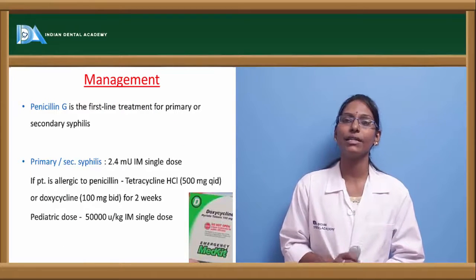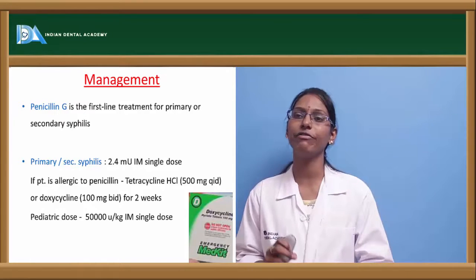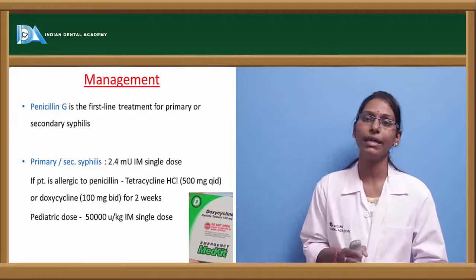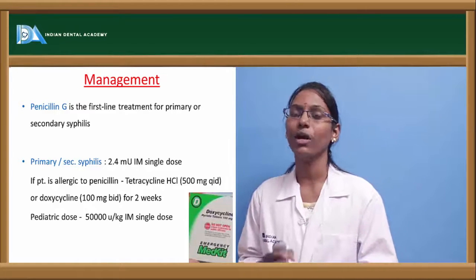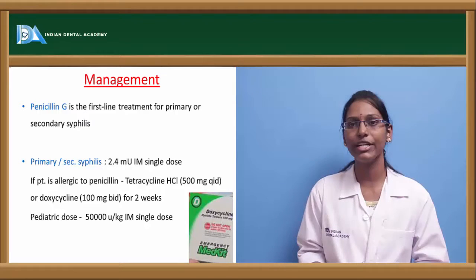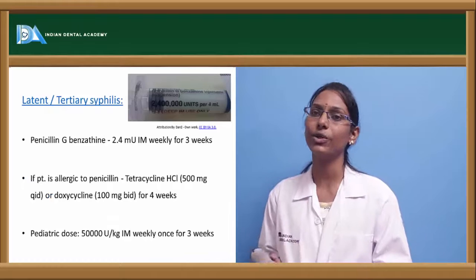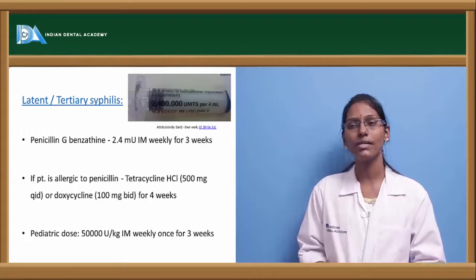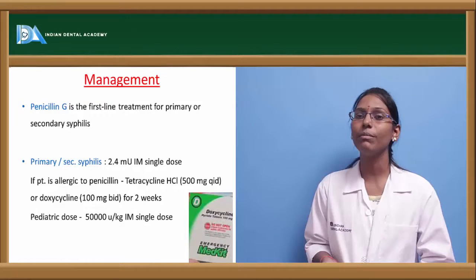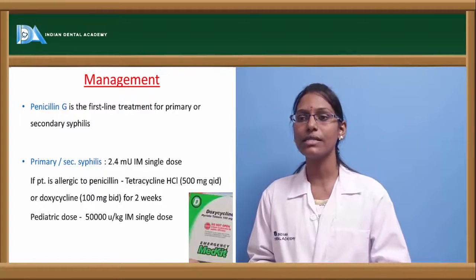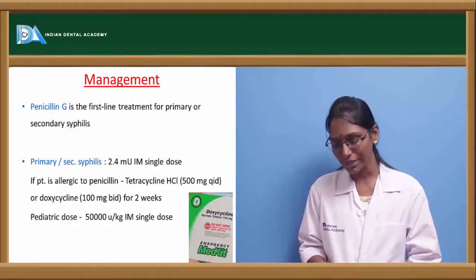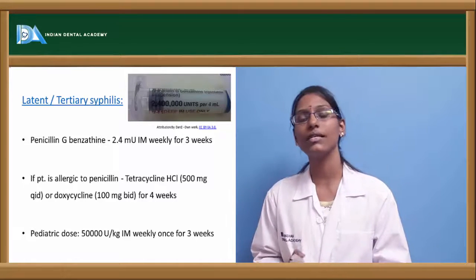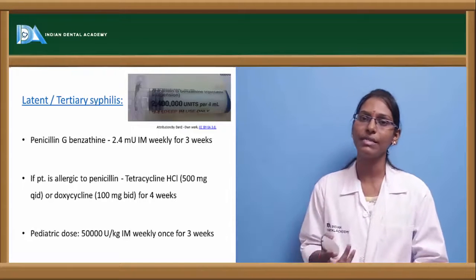The first-line drug for syphilis is penicillin G. For primary and secondary syphilis, 2.4 million units of penicillin G as a single intramuscular dose is sufficient. For tertiary and quaternary syphilis, 2.4 million units of penicillin G must be given for about three weeks. If the patient is allergic to penicillin, doxycycline or tetracycline can be given. Tetracycline 500 mg four times daily and doxycycline 100 mg twice daily for two weeks covers early stages; for tertiary/quaternary, these are extended to four weeks.